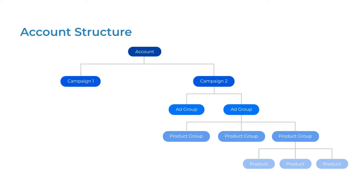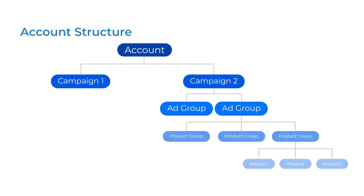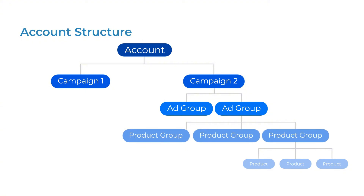Let's start with how campaign structures look starting at the account level. This is the hierarchy that you will grow familiar with over time. Your account contains all your Google Shopping campaigns. Inside those campaigns, you have multiple ad groups. Ad groups then contain product groups, which are composed of your individual products.